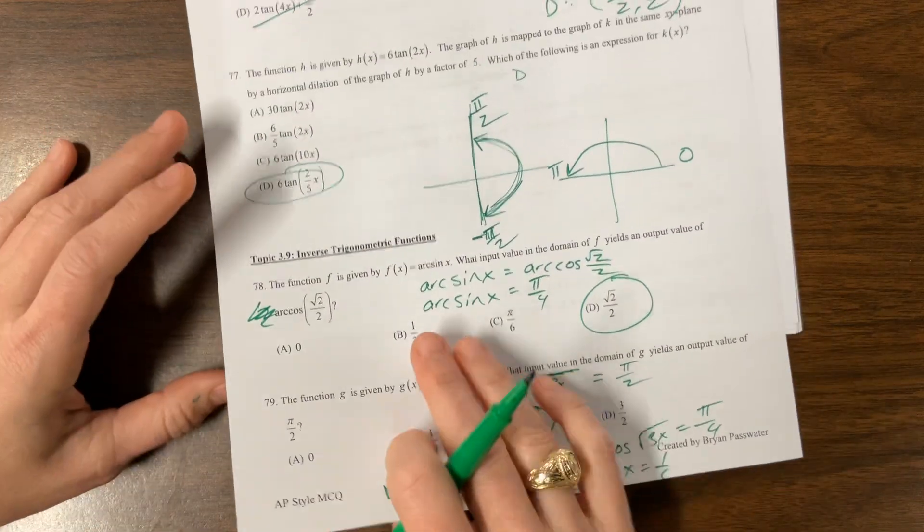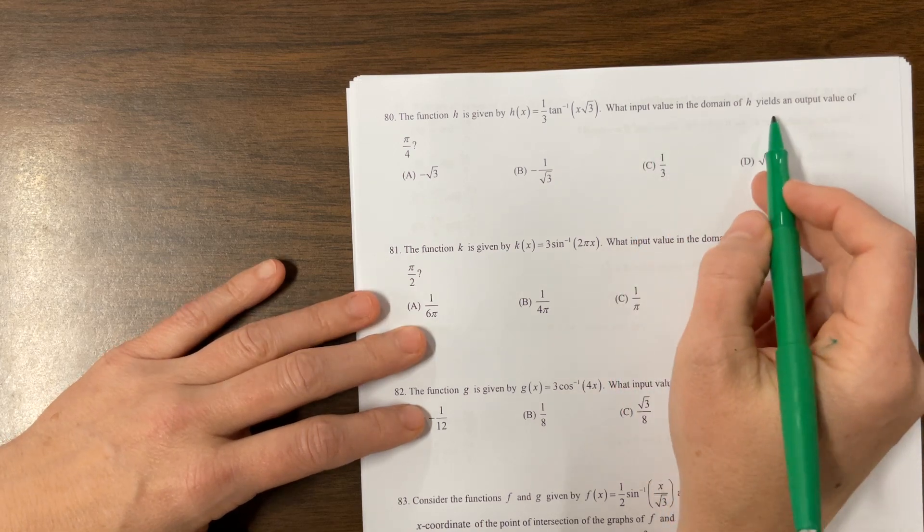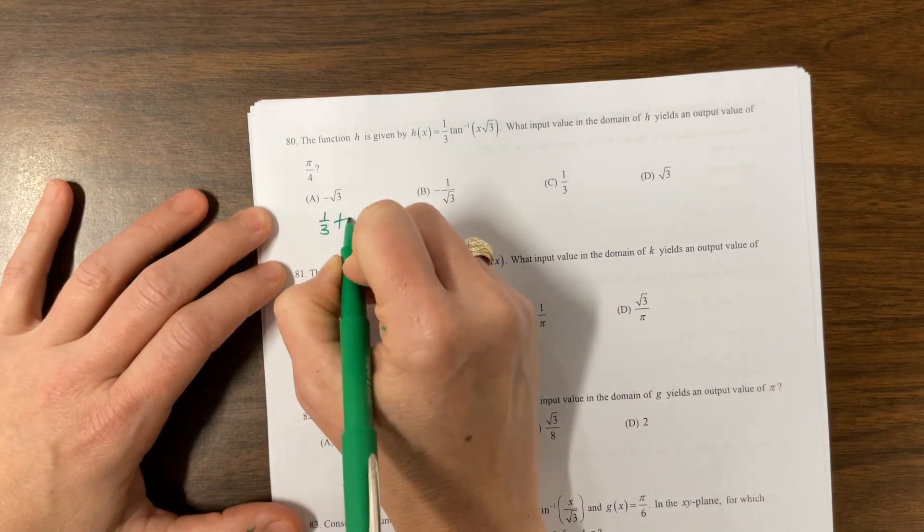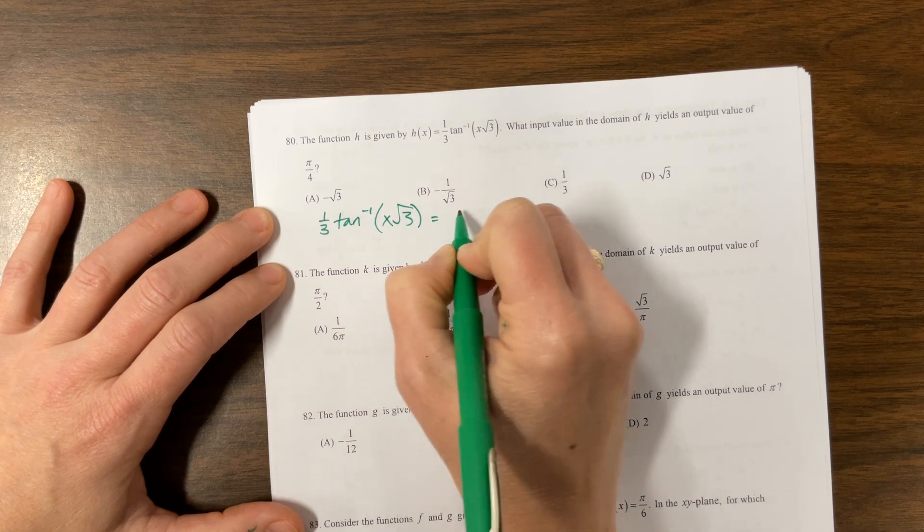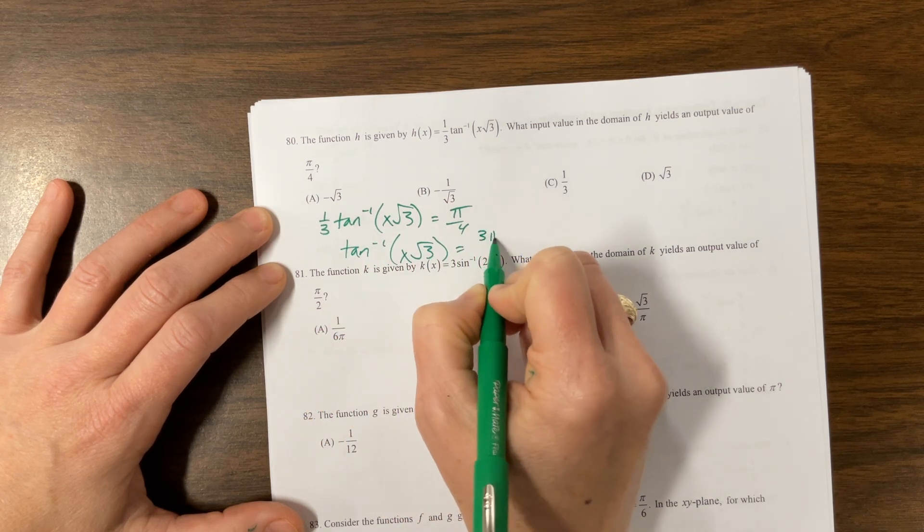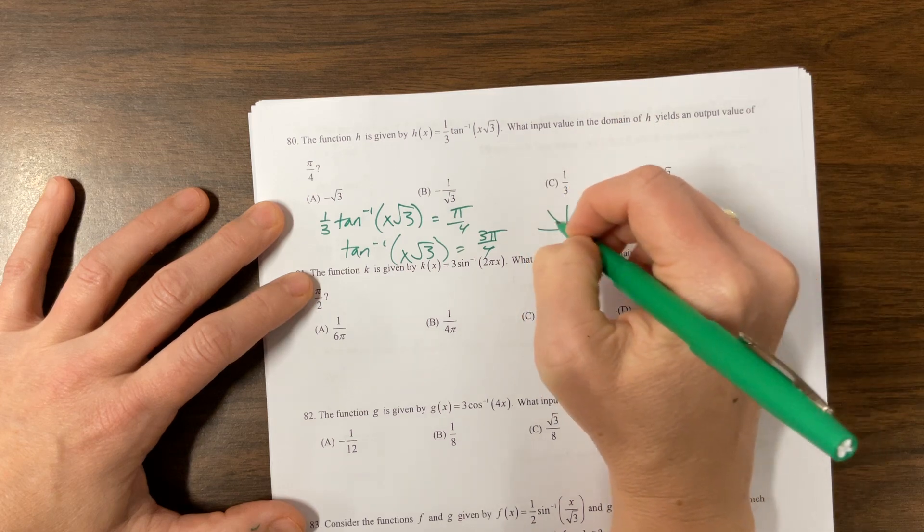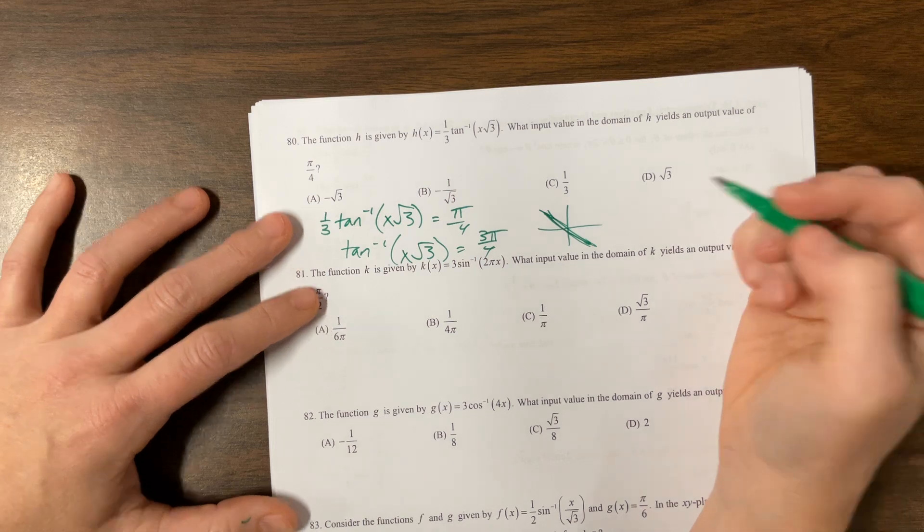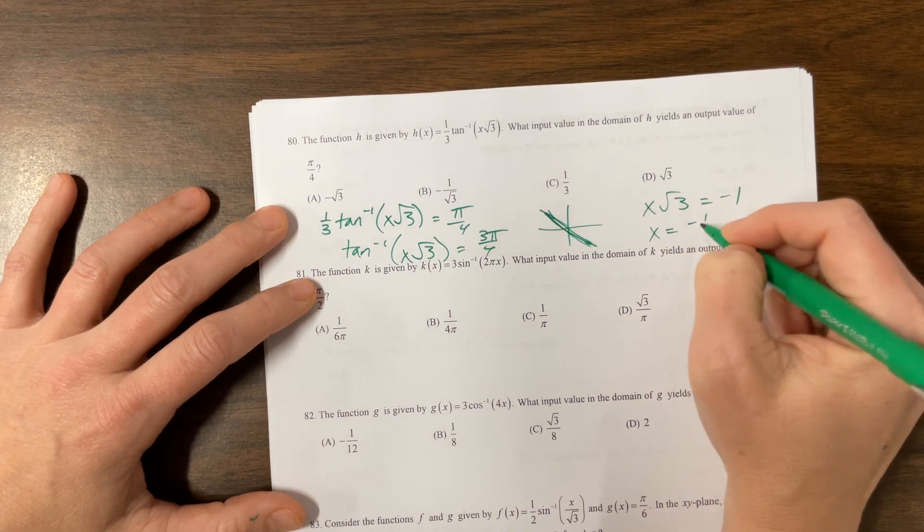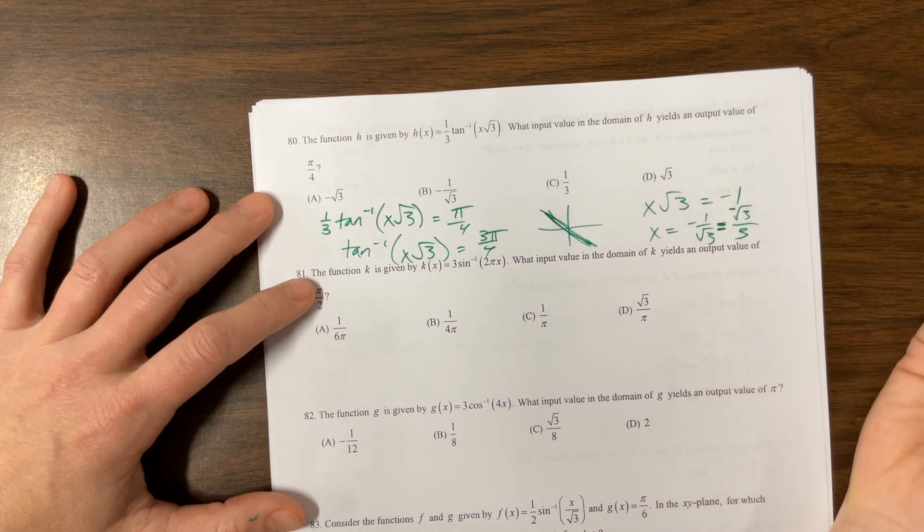That got really messy. I'm sorry. Okay. Here we go. We have this one. What input value in the domain gives us an output value? Same idea. So, let me be a little more organized with this one. I can say 1 third inverse tangent, same thing as arc tangent, X root 3 is equal to pi over 4. So multiply by 3 to make this just inverse tangent. So we want to take the tangent of both sides. 3 pi over 4 is in quadrant 2. So in quadrant 2, pi over 4 with tangent is our favorite because it's just 1 or negative 1. And in this quadrant, the slope is negative. So I get x root 3 is equal to negative 1. Now let's divide by root 3. I have negative 1 over root 3, which is also negative root 3 over 3. But we stopped here.